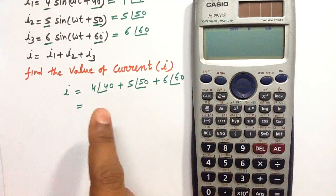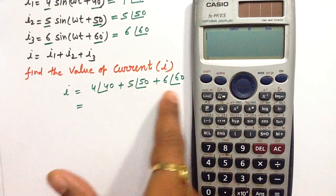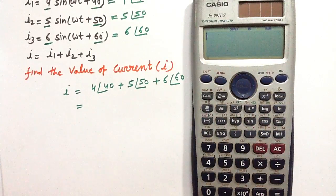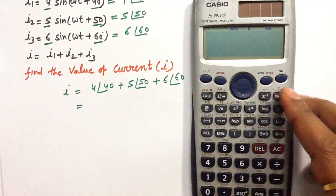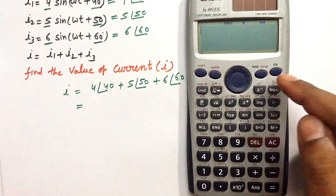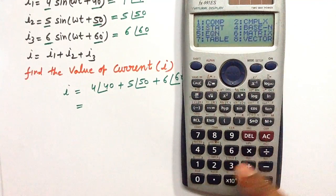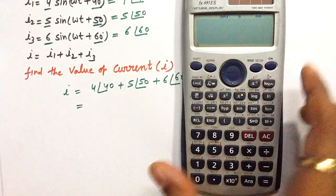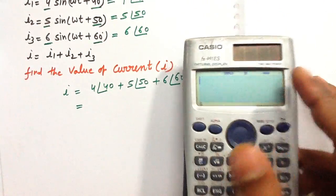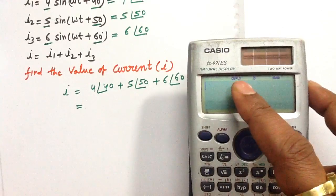I'm going to write this expression on the calculator screen. First, set the calculator mode to complex by pressing Mode, then 2. You'll see CMPLX on the screen, indicating the calculator is now operating in complex mode.